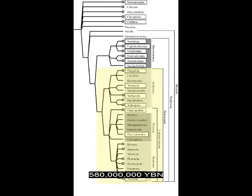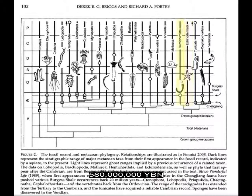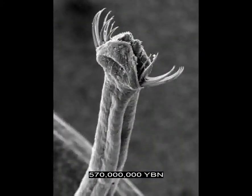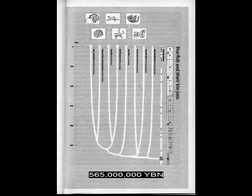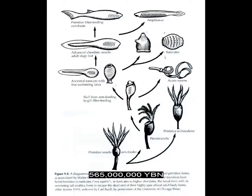Bilaterians — protostomes evolve, divided into two major groups: the Ecdysozoa and the Lophotrochozoa. The Lophotrochozoa is subdivided into the Platyzoa and the Trochozoa. Bilaterians — deuterostomes evolve — ancestor of all echinoderms, hemichordates, and chordates. First shell or skeleton evolves. Bilaterians Chaetognatha — arrowworms — earliest teeth. Animals start to eat other animals. Deuterostomes hemichordates evolve: Enteropneusta — acorn worms. The free-swimming younger form of Enteropneusta may evolve into tunicates and then the first fish.